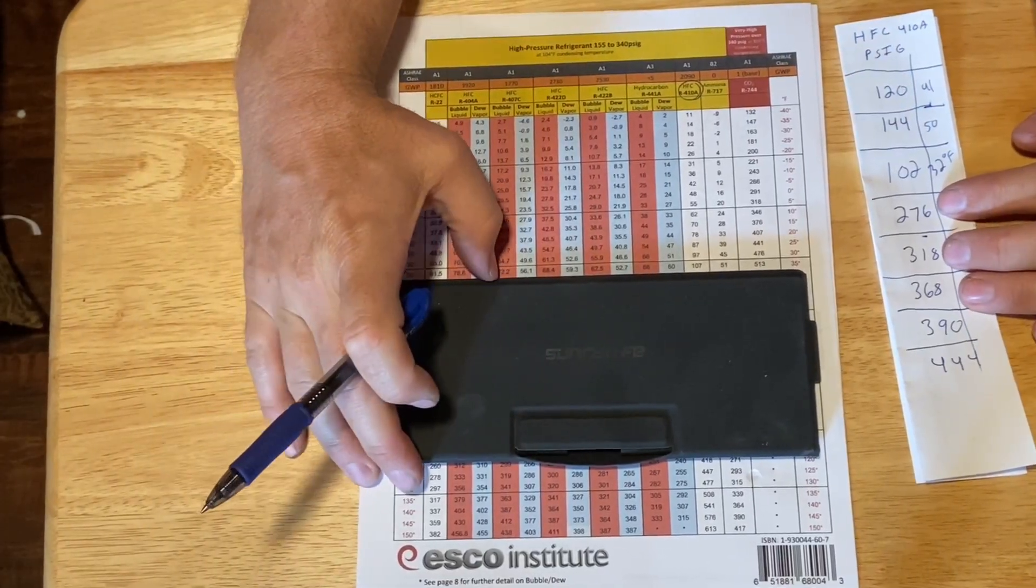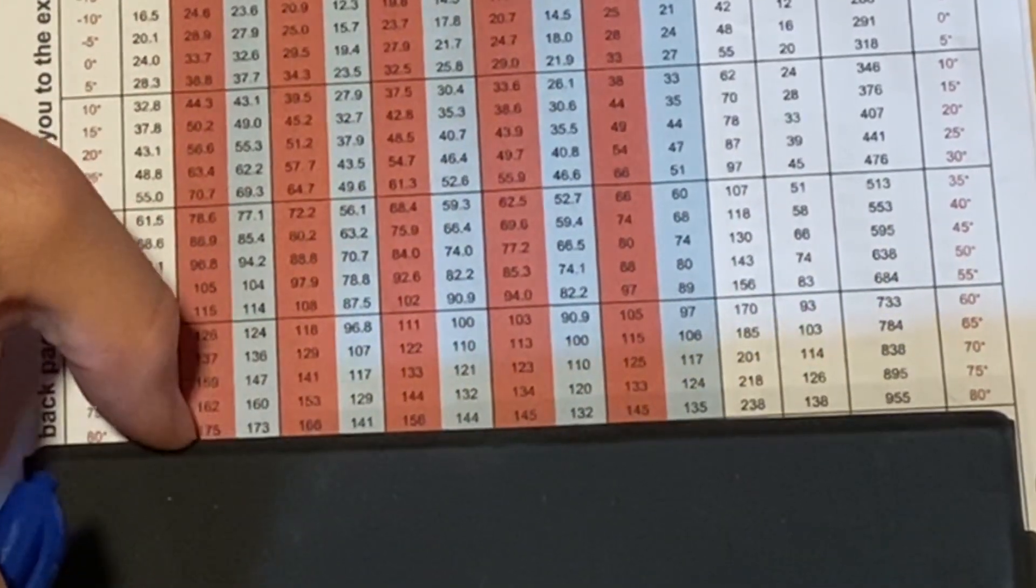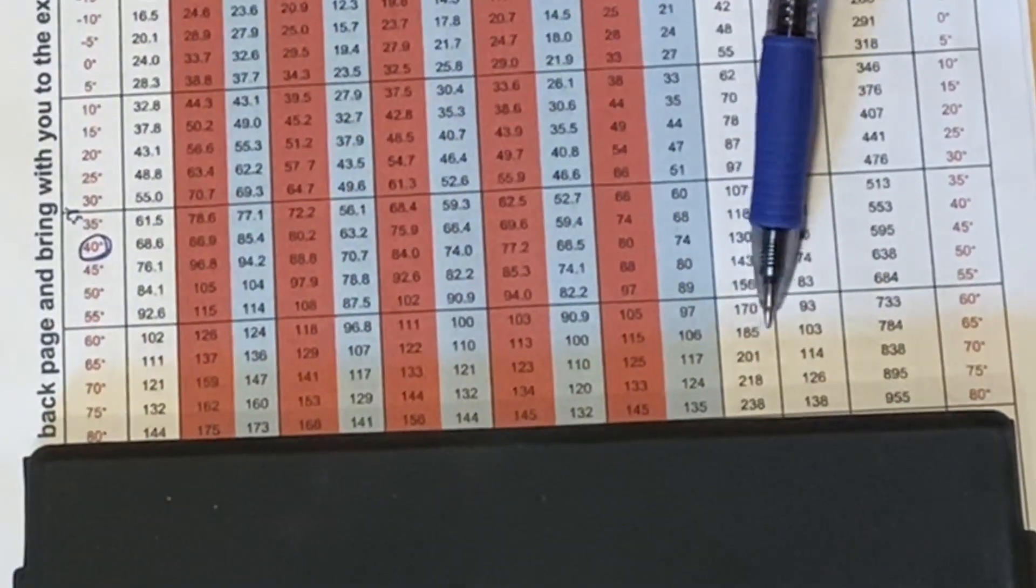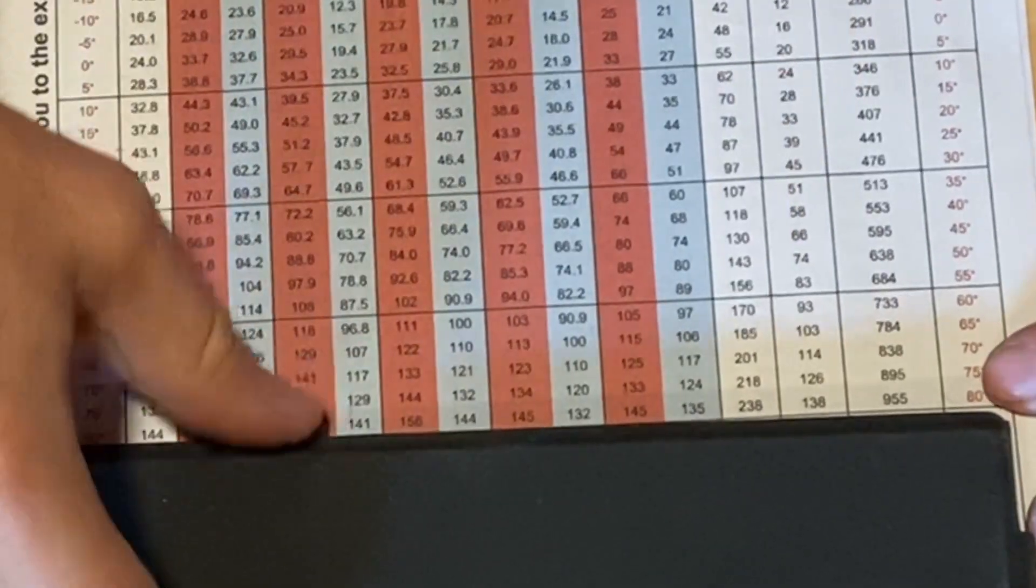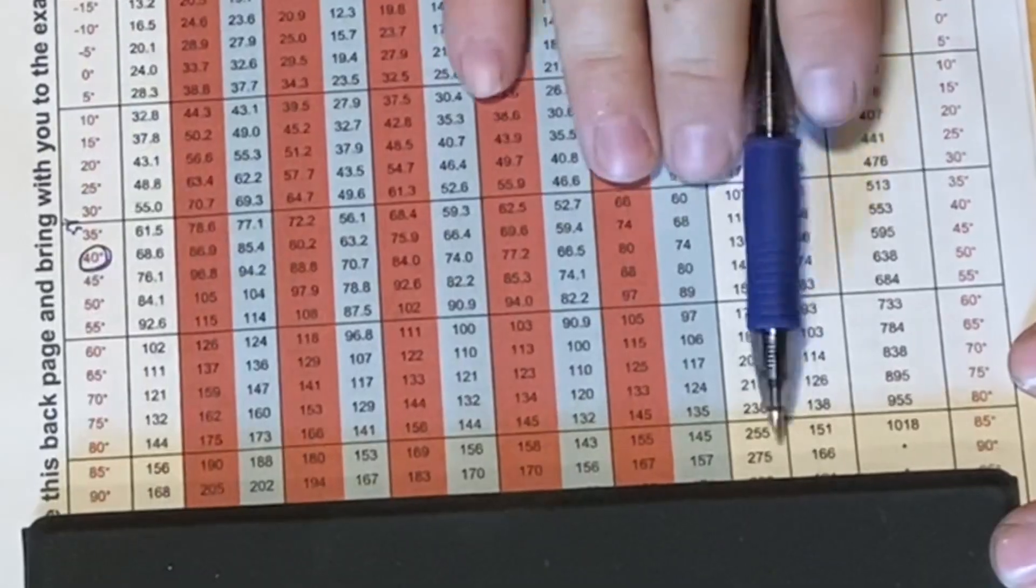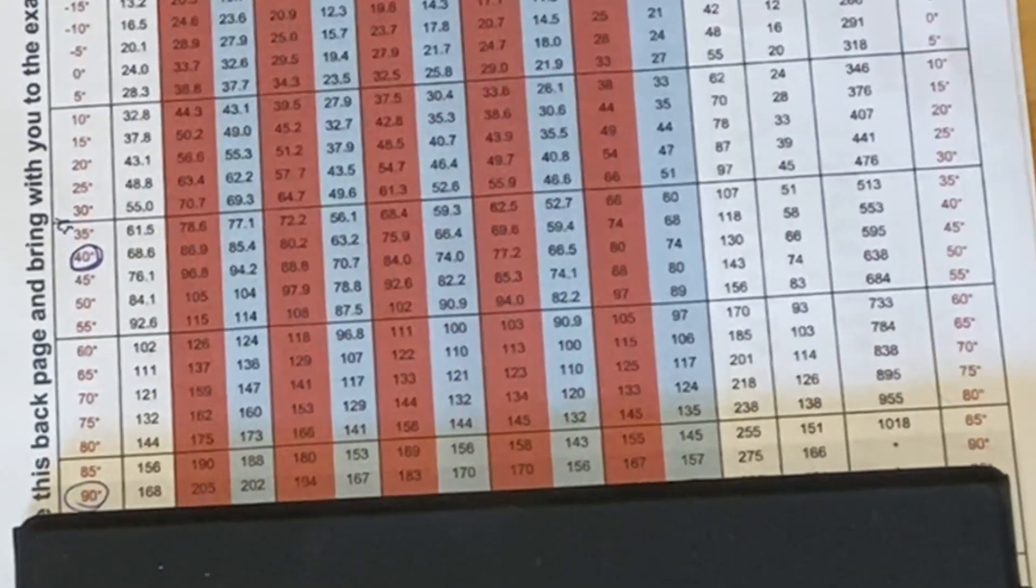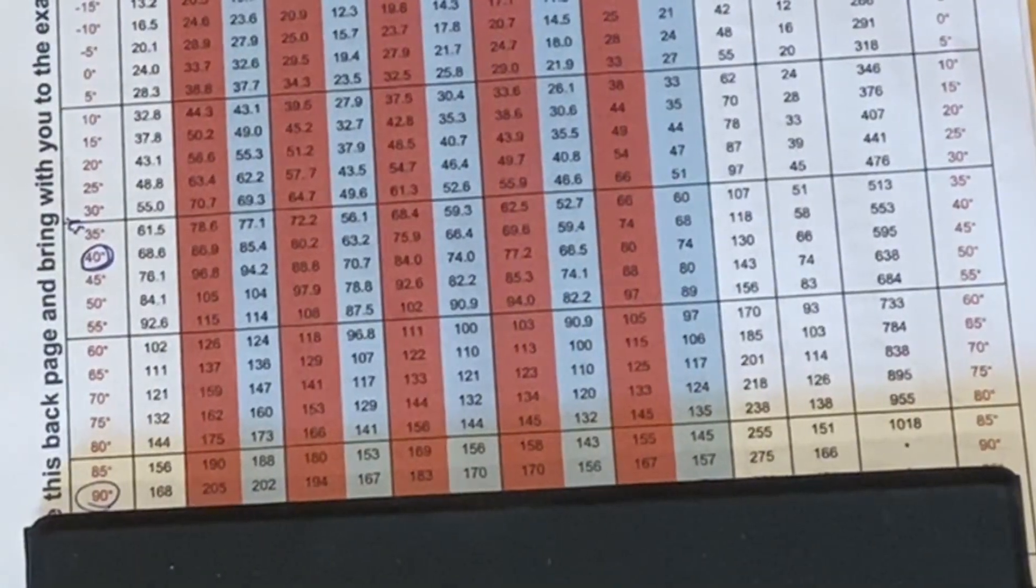Let's look at the next number here. We have 276. This is gonna be our high side. So we're gonna move over to 276. And on our list we don't have 276. We have 275 which is really close. Close enough for me. That shows us at 90 degrees saturated temperature. So I'm gonna write 90.